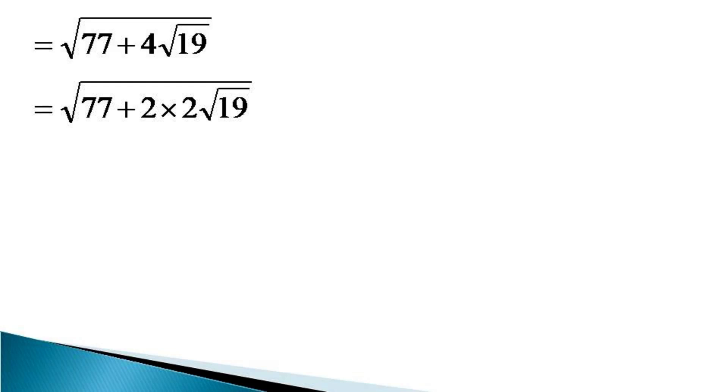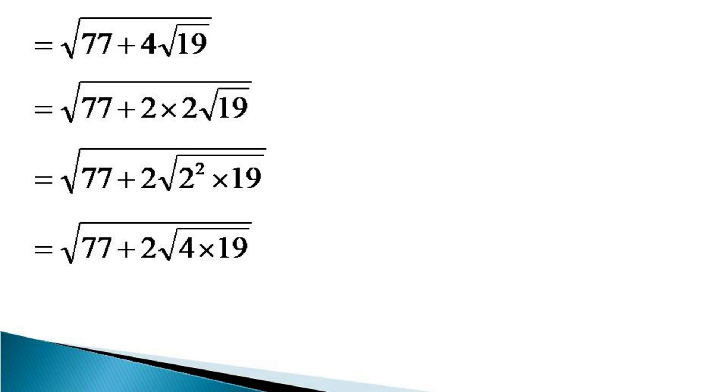One of the 2s we take inside the root and it is expressed again as equal to √(77 + 2√(2² × 19)). This becomes equal to √(77 + 2√(4 × 19)) or equal to √(77 + 2√76).